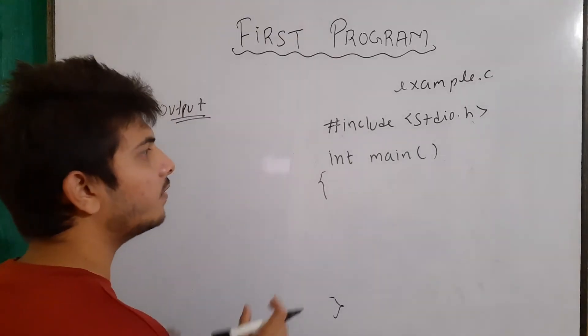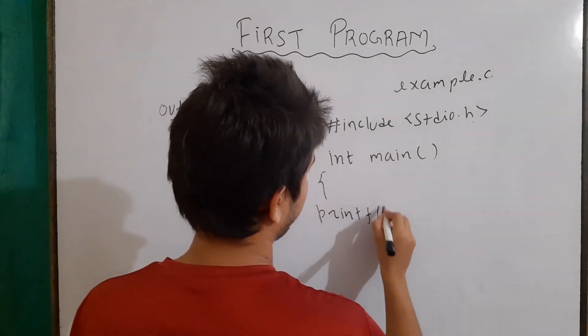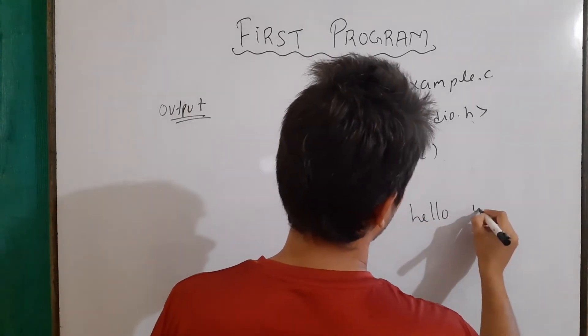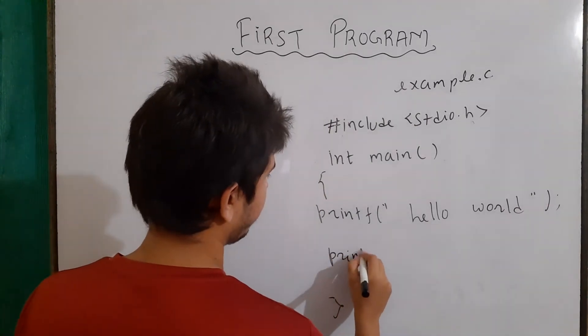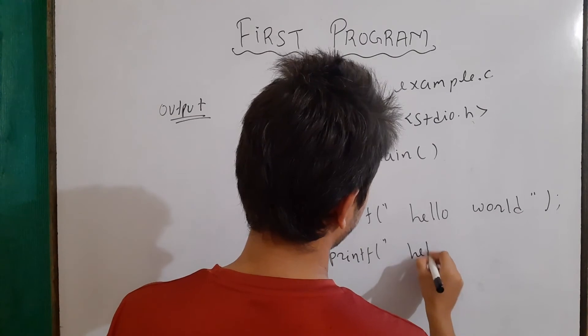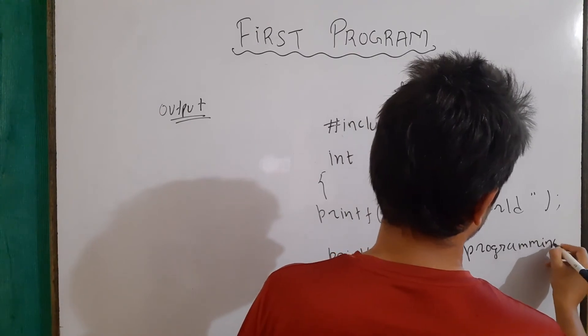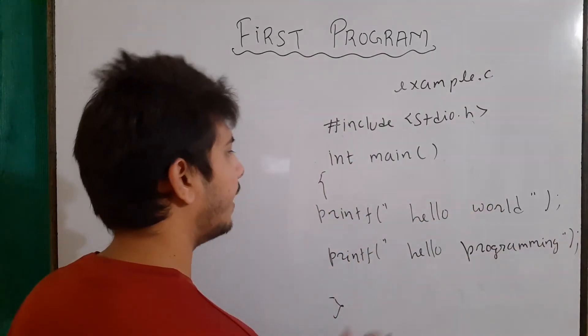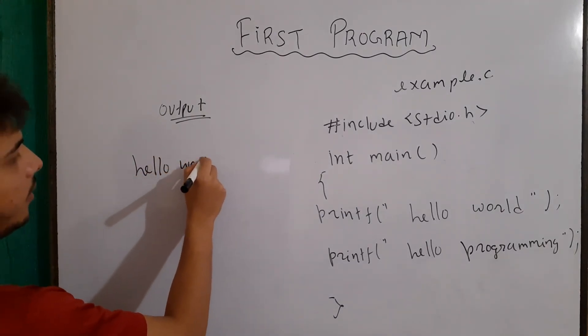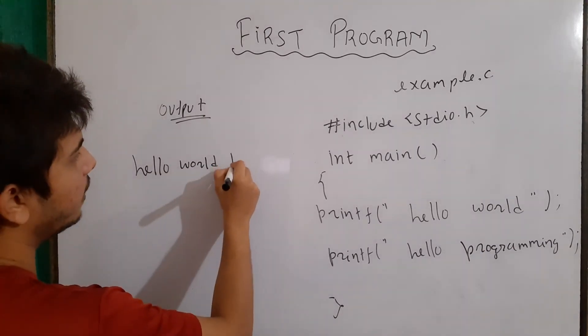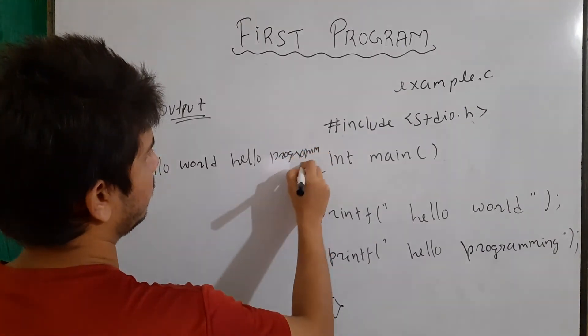Now, let's make another program in which we will print two lines. So, first of all, we will write printf and then we will write hello world. And then in the next printf, we can write hello programming. Then we will compile it and run it in our output. The output will be hello world. And in the same line, it will be hello programming.